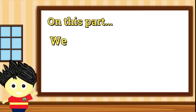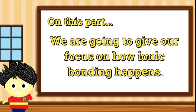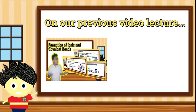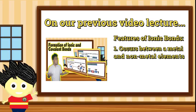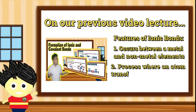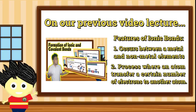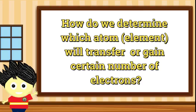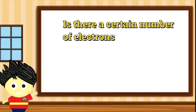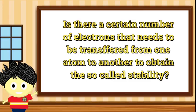Sa bahaging ito, bibigyang pansin muna natin kung paano ba nagaganap ang tinatawag nating ionic bonding. Tulad ng nabanggit natin sa ating previous video lecture, ito ay nagaganap sa pagitan ng mga metals at non-metal elements. Bukod dito, ito ay may proseso kung saan ang isang element ay nagbibigay ng electrons samantalang ang kapareha naman nito ay tumatanggap. Ngunit paano nga ba natin malalaman sa ionic bonding kung aling element ang tatanggap at alin ang magbibigay? At gaano kadami ang electrons ang pwedeng tanggapin o ibigay ng isang element para ma-achieve ang tinatawag na stability?